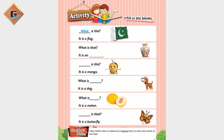'What is this?' — so the answer is 'It is a flag.' The next question is 'What is that?' — 'What is that?' — the answer is 'It is an urn.' 'It is an urn.'